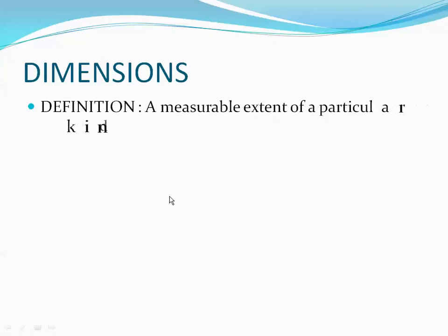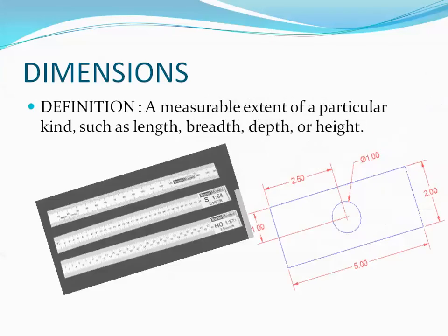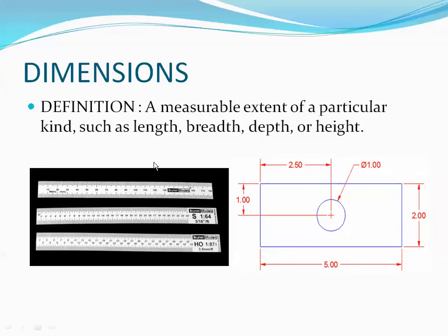A dimension is a measurable extent of a particular kind, such as length, breadth, depth, or height. That's the basic definition. As an example, we use a scale as a medium to measure the dimensions of physical bodies. Here we have a circle and a rectangle, in which we have measured the length and breadth of the rectangle, the diameter of the circle, and the distance between them.